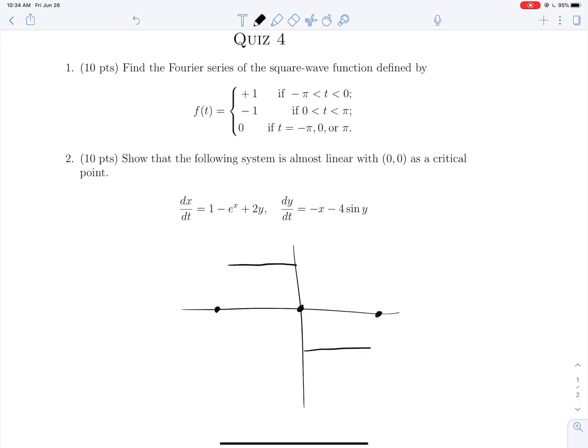Here is our function here. This is t equals pi, t equals negative pi, and y equals 1, f of t equals 1, f of t equals negative 1. So there's our function there.